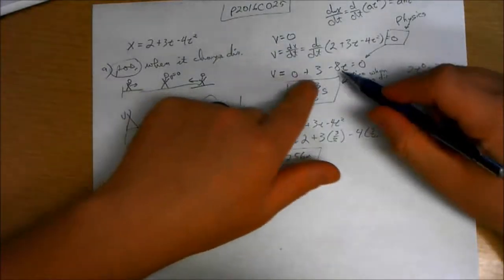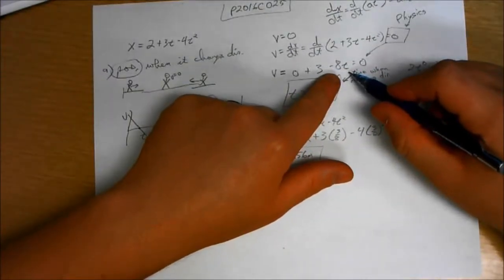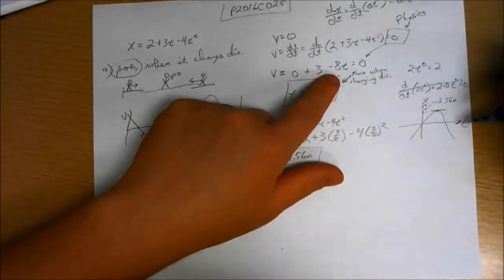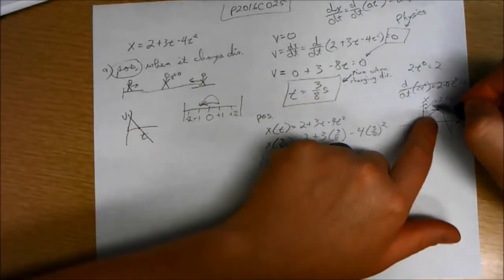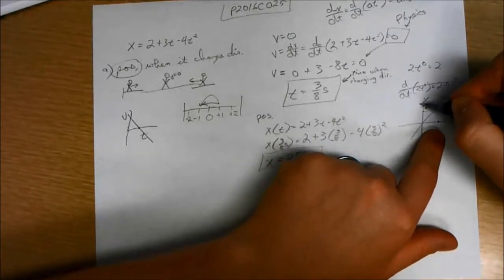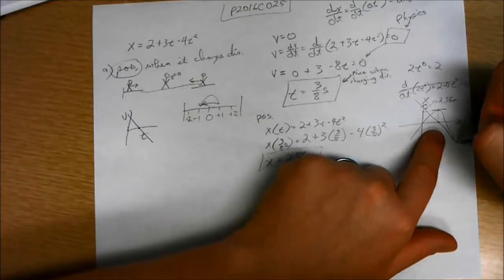The velocity would be a linear function with a slope of negative 8. So it's going to be sloped this way. I know that it must be 0 at this point in time. So the velocity is going to look something like that.